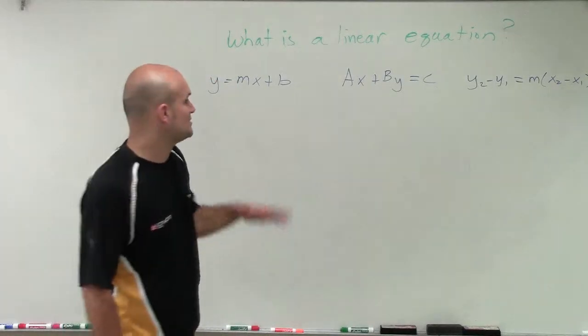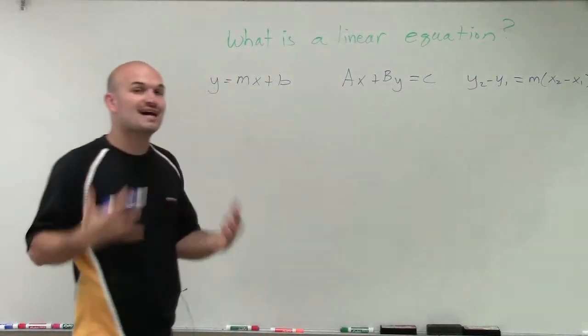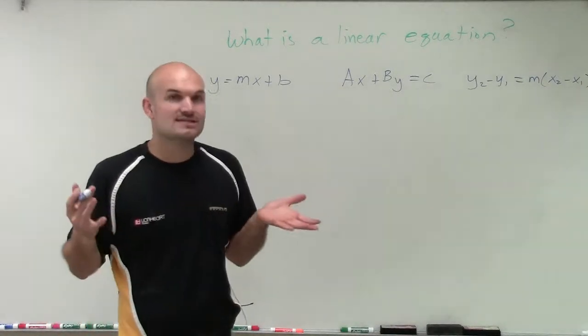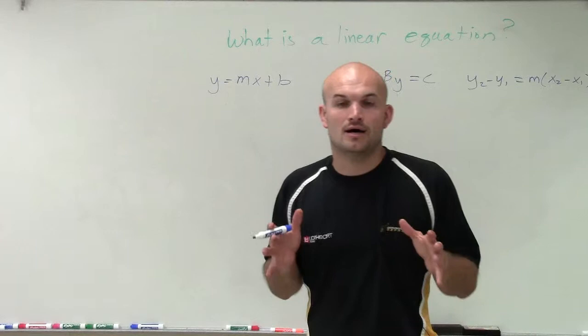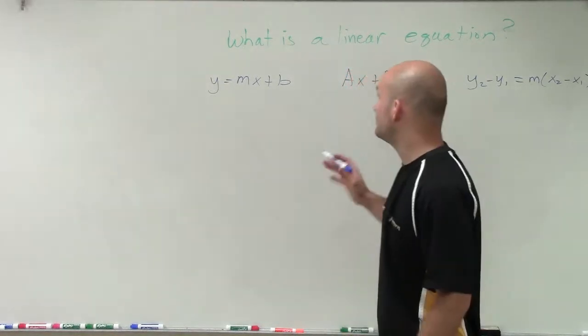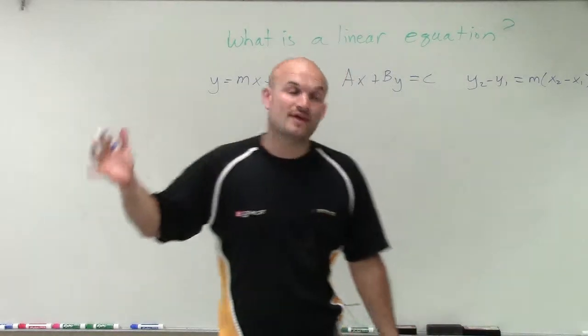When we're dealing with a linear equation, the main important thing is our m, our slope, has to be constant. Now, when we're looking at a linear equation, there's one thing that we have to make sure of. First of all, each one of the variables cannot be raised to a power greater than 1.